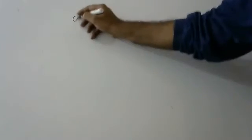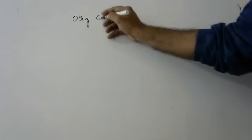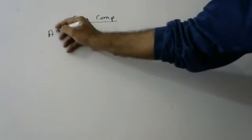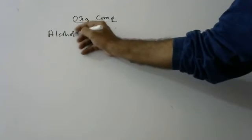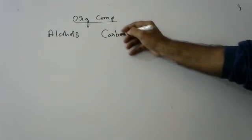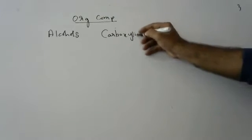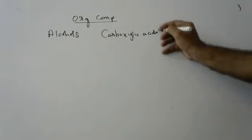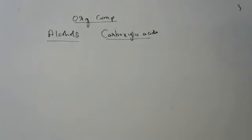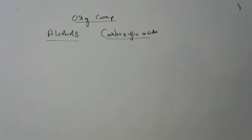Today we are going to discuss the differences between alcohols and carboxylic acids. We can differentiate them into physical and chemical differences. There are two types of differences: physical and chemical differences.